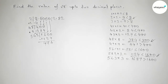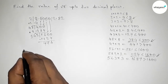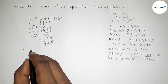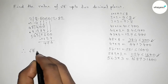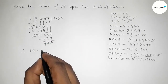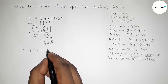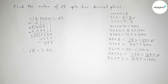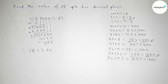We have found the value of root 8 up to two decimal places, so root 8 equals 2.82. That's all — thanks for watching. If this video is helpful to you, please share it.